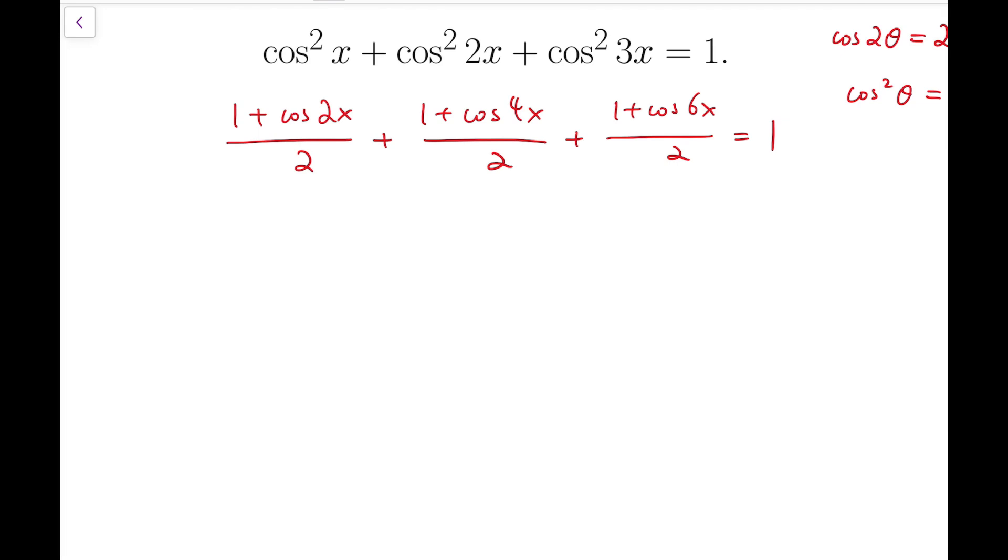Simplifying, which is easy because all three fractions have the same denominator, we have (3 + cos 2x + cos 4x + cos 6x)/2 = 1. Simplifying further, the sum of the three cosines equals -1.